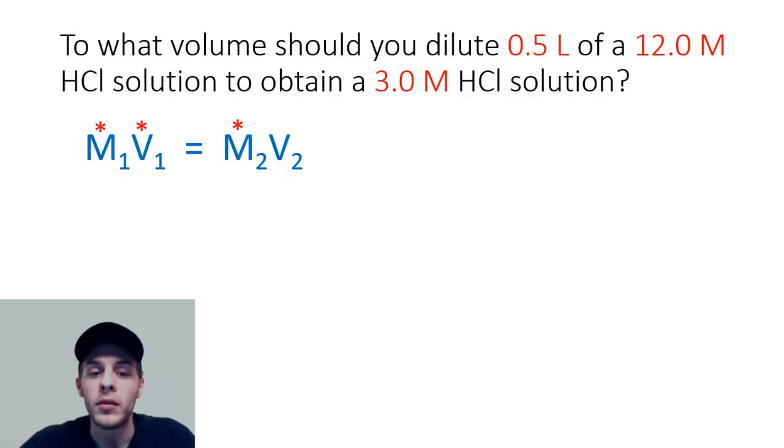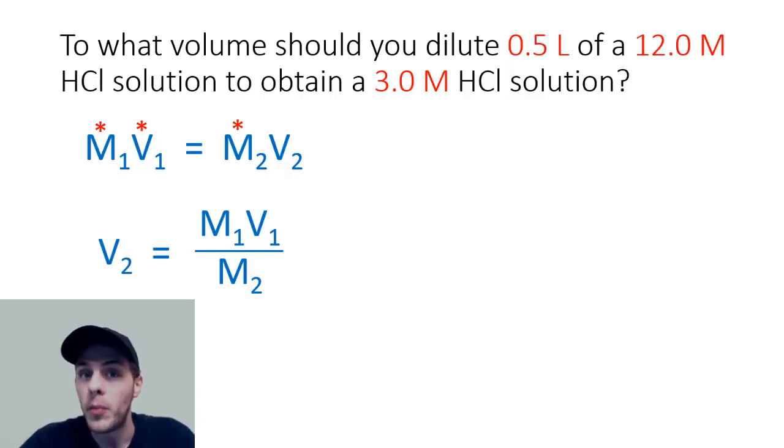We're trying to solve for V2, so this is as easy as just dividing both sides of this formula here by M2, and this equation is going to become V2 equals M1V1 divided by M2.